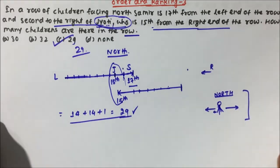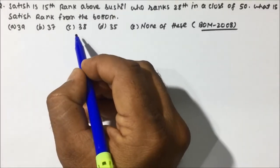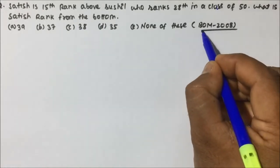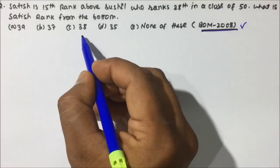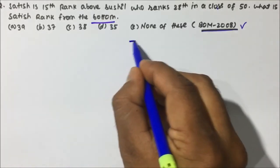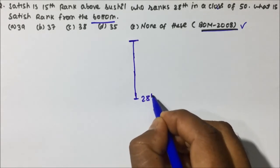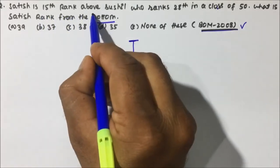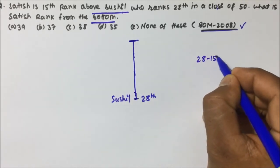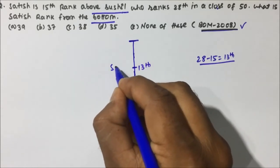Let's see question number 2. Satish is 15th rank above Susil, who ranks 28 in a class of 50. What is Satish's rank from the bottom? This question was already asked in the Bank of Maharashtra PO 2008 exam. From the top, Susil's rank is 28. So 28 minus 15 gives 13th rank. Satish's rank from the top is 13th.